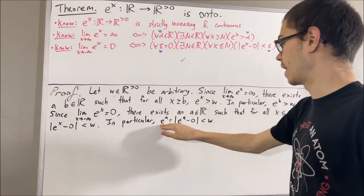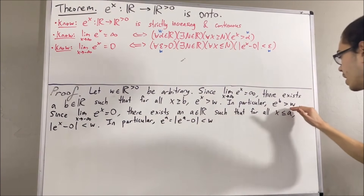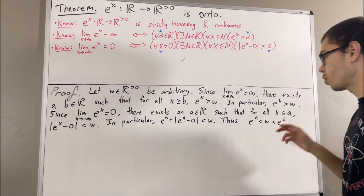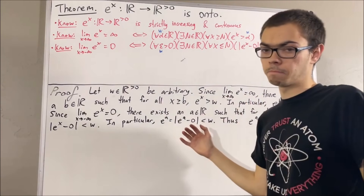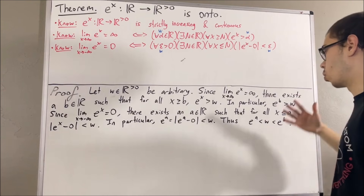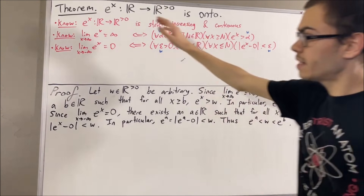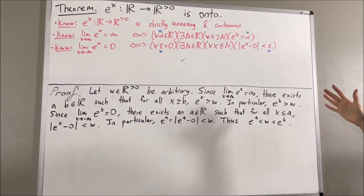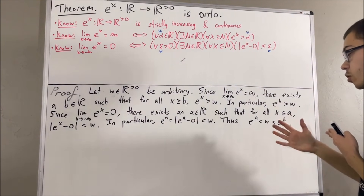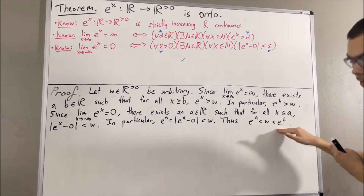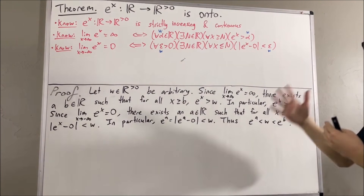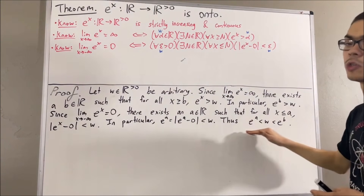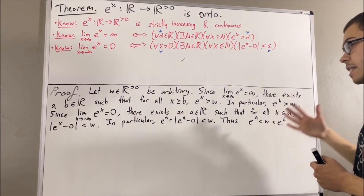What we see here is that e^a < w < e^b. Now, there are three possible ways that a and b are related: either a = b, a < b, or a > b. But since the exponential function is strictly increasing, the only possibility is that a < b. Because if a = b then e^a = e^b, which is false. If a > b, then strictly increasing implies e^a > e^b, which is also false. So the only possibility is that a < b.